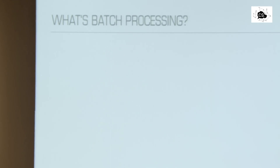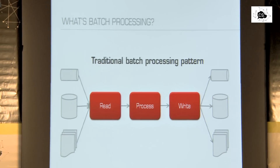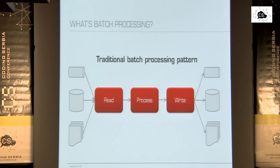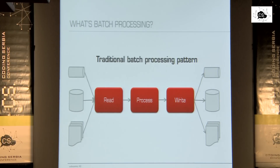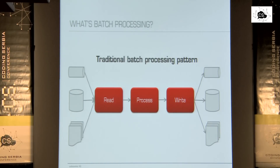Let's start with batch processing. This is a general batch processing pattern. We have some sources of data where we read from — this could be a queue, database, or file. We read this data record by record. Then we process the data — that can be any business logic, any validation, any transformation. And then we write that data again to some data sources, like queues, databases, or files. SpringBatch has a lot of support for NoSQL data stores as well, but it comes from the traditional batch processing perspective, where a lot of files and relational databases are involved.